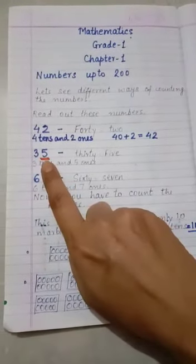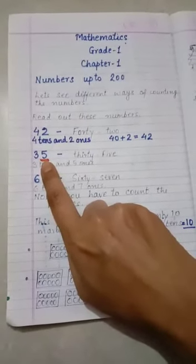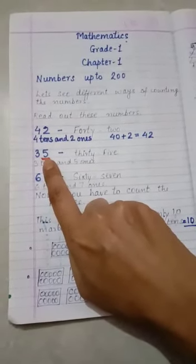In the number 35, if we ask what is the place value of 5? Then, 5 is at the ones place and its place value is 5.